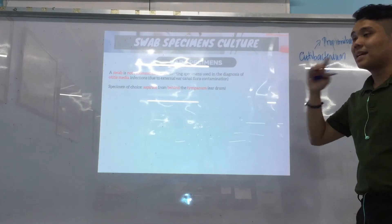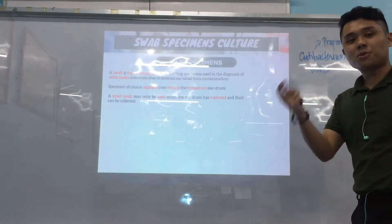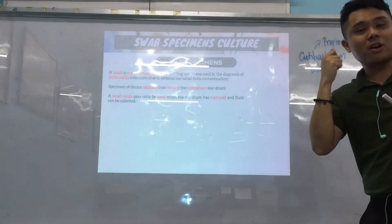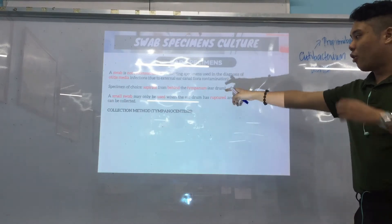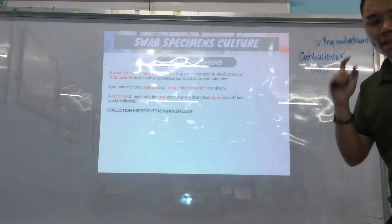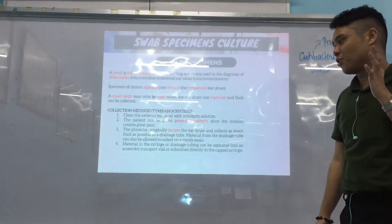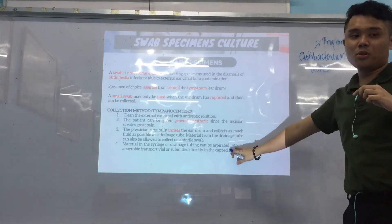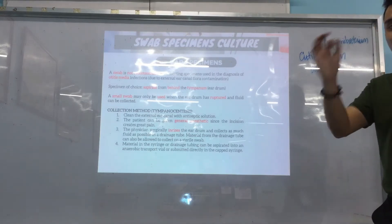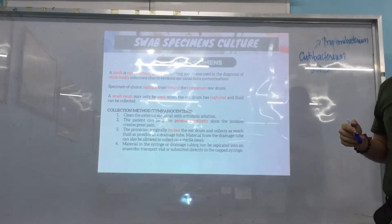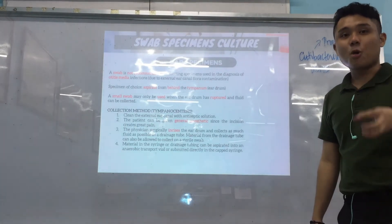The specimen of choice is the aspirate from behind the tympanum or eardrum. A small swab may be used only if the eardrum has ruptured and fluid is coming out. If not, we perform tympanocentesis — aspirating the fluid from behind the eardrum. Anesthesia is given first because the incision is painful. The doctor incises the eardrum, inserts a tube, drains the fluid, collects it with a sterile swab or syringe, and places it in an anaerobic transport medium.